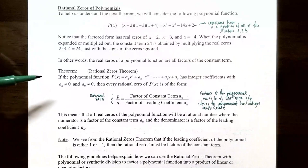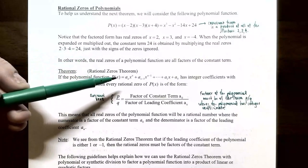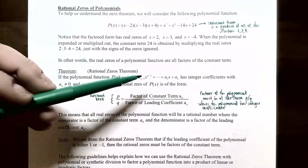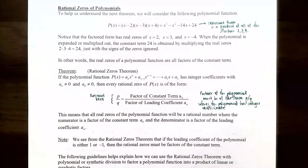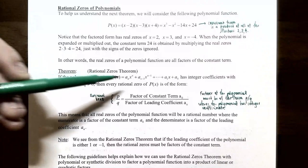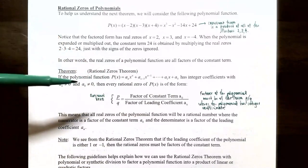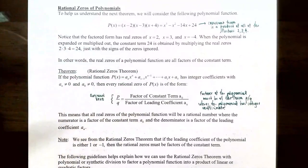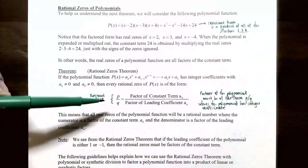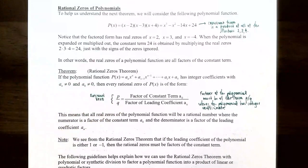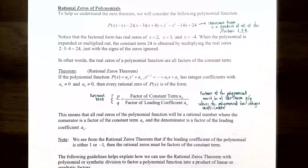This is the rational zeros theorem. If the polynomial P(x) is written in standard form a_n·xⁿ + a_{n-1}·x^{n-1} + ⋯ + a_1·x + a_0, where each coefficient is an integer, the leading coefficient is not zero, and the constant term is not zero, then every rational zero is of the form p/q, where p must be a factor of the constant term a_0 and q must be a factor of the leading coefficient a_n. The numerator must be a factor of the constant term and the denominator a factor of the leading coefficient.